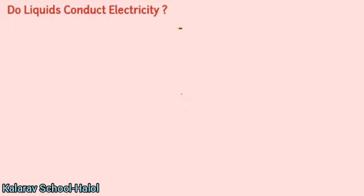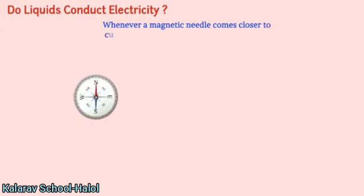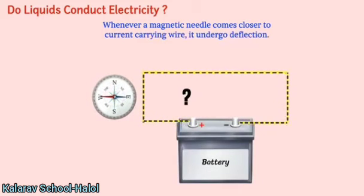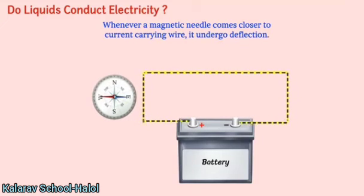There is another way of making a tester. Whenever a magnetic needle comes closer to a current-carrying wire, it undergoes deflection. Can we use this principle to make a tester? Yes, we can. Here is an activity showing how we can do it.